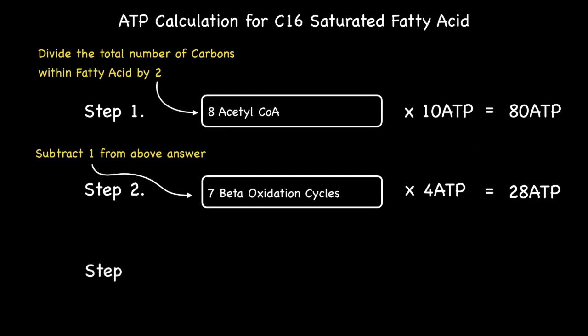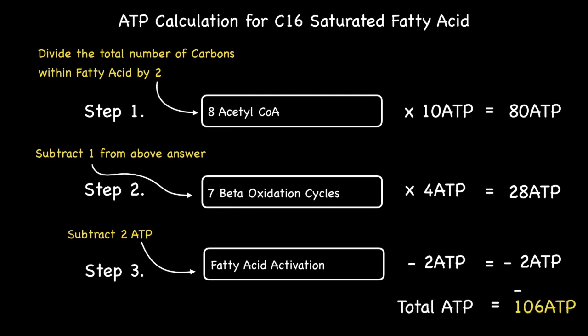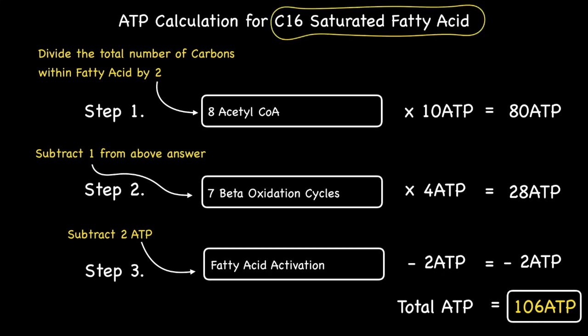Finally, during step three we need to subtract two ATPs for fatty acid activation. Adding the corresponding totals associated with each of these three steps gives a total yield of 106 ATPs for a C16 fatty acid.